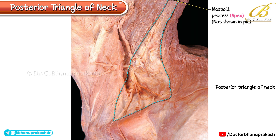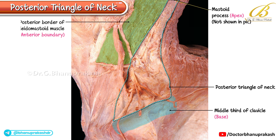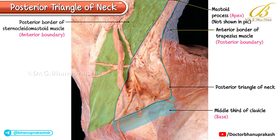At the top, the apex of the triangle is directed toward the mastoid process, while the base lies along the middle third of the clavicle. The anterior boundary is formed by the posterior border of the sternocleidomastoid muscle, and the posterior boundary by the anterior border of the trapezius muscle. Superiorly, the apex is located at the junction of the tendinous parts of the sternocleidomastoid and trapezius muscles.